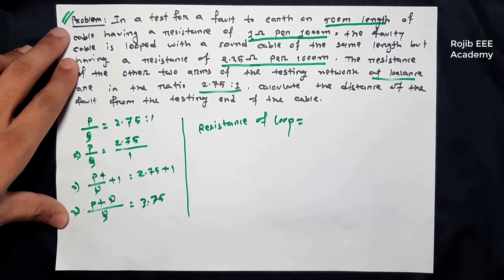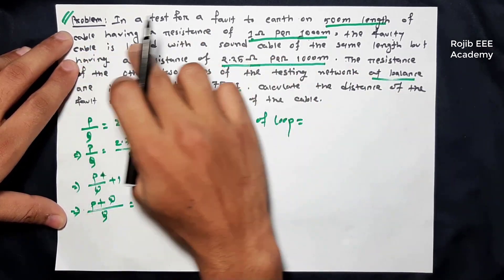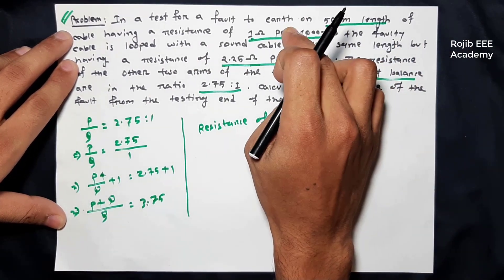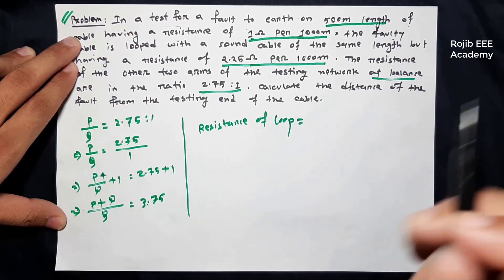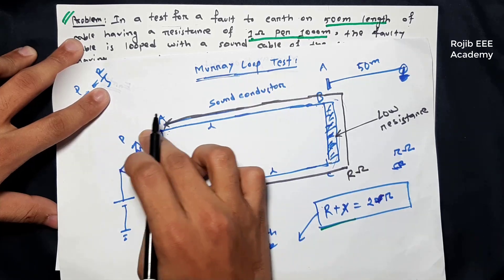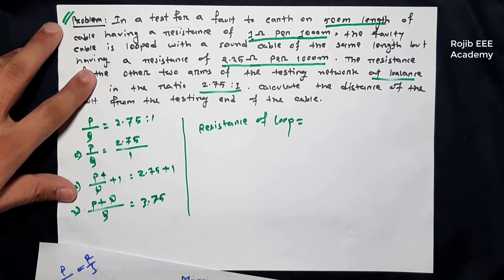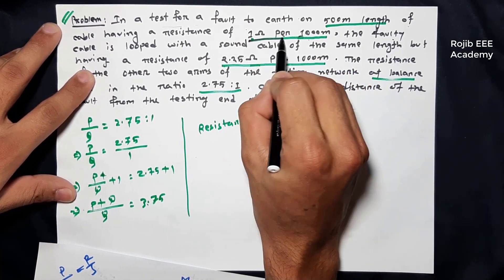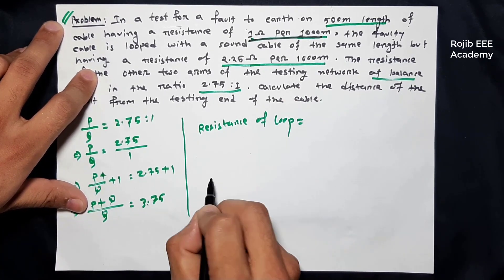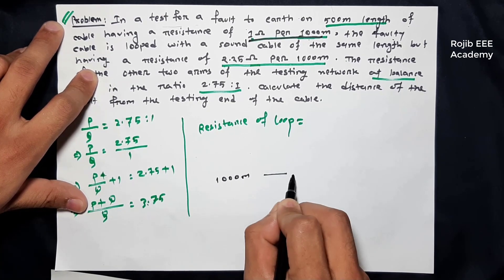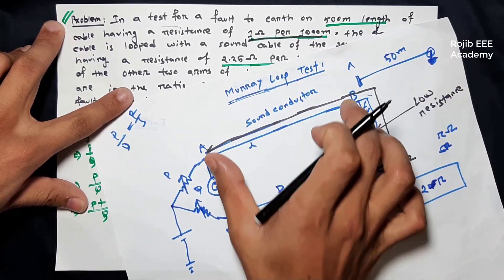The fault cable is looped with a sound cable. The fault cable is looped, meaning the sound conductor and fault cable are connected. The fault cable has a 500 meter length with a resistance of 1 ohm per kilometer. The loop resistance calculation: the resistance per 1000 meter divided by 1000, and the length is equal to 500 meters.